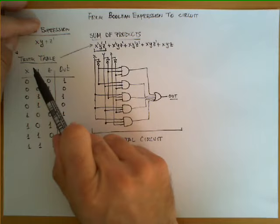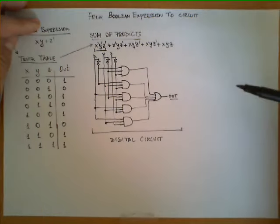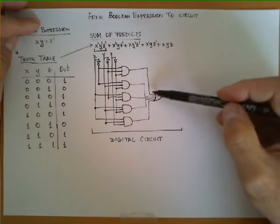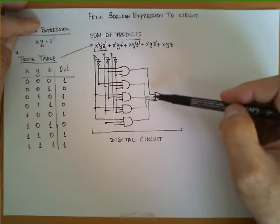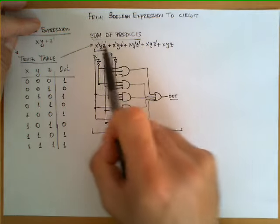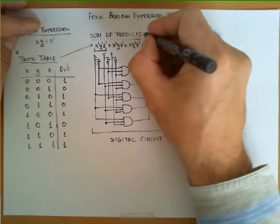So in this case since the function has three input variables all these AND gates will have three inputs. And the overall OR or the final OR that we connect all of them has as many inputs as terms or products are in our SOP representation.